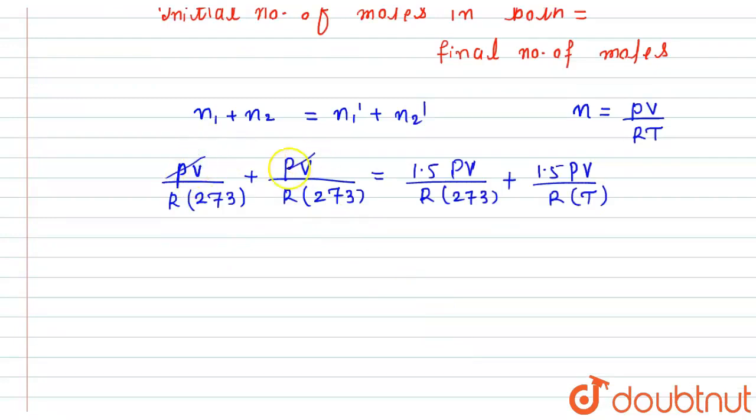So this PV will get cancelled, while R will also get cancelled. So after simplifying this we get, this will become 2 divided by 273, this would become equals to 1.5 divided by 273 plus 1.5 divided by T.